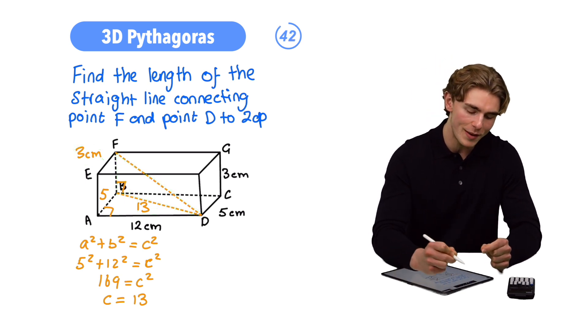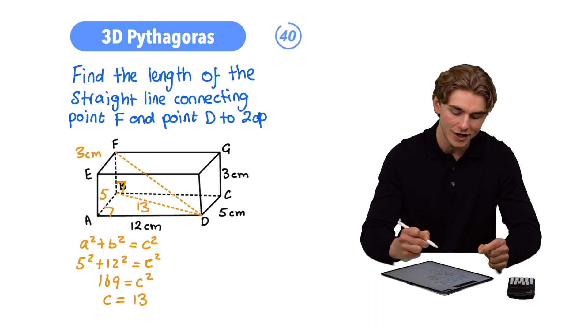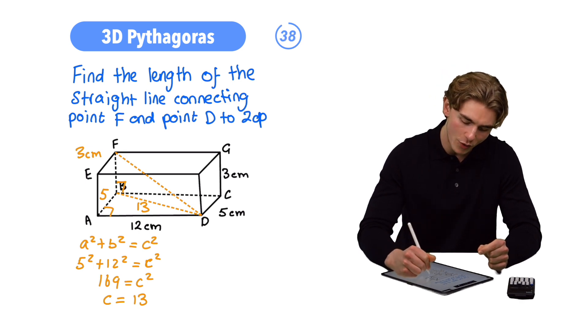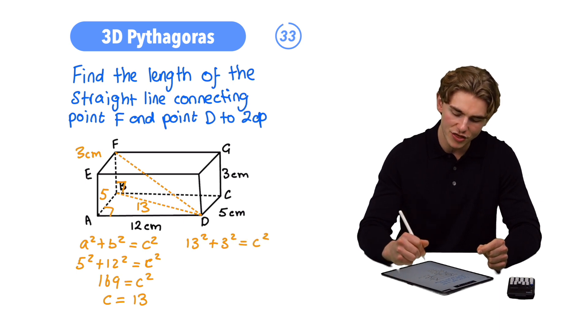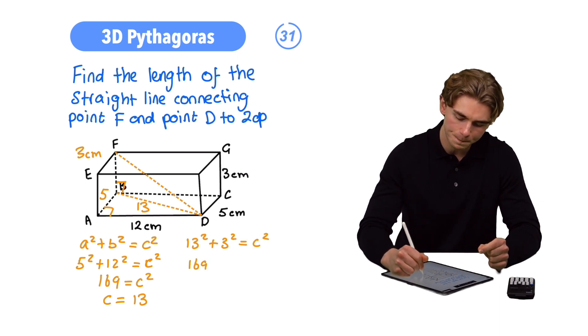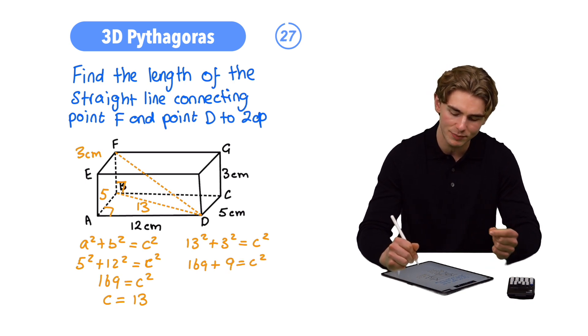So what are we going to have? We're going to have a squared plus b squared equals c squared, where A and B are 3 and 13. So we can write in that 13 squared plus 3 squared is equal to c squared. 13 squared is 169. 3 squared is 9. That's going to be equal to c squared. 169 plus 9, that is going to be 178 equal to c squared.